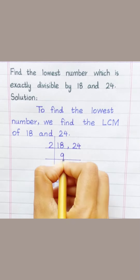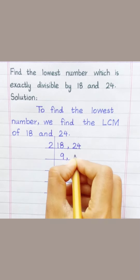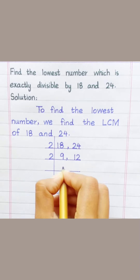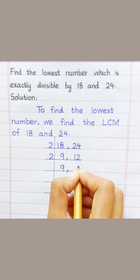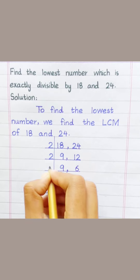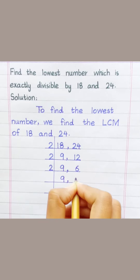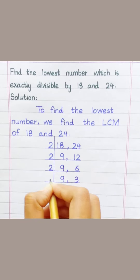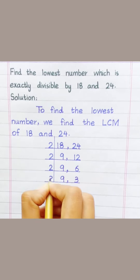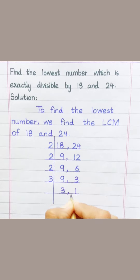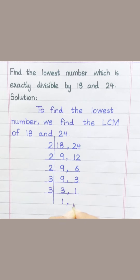Two 9s are 18, two 1s are 2, two 2s are 4, two 6s are 12, two 3s are 6, three 3s are 9, three 1s are 3, three 1s are 3.